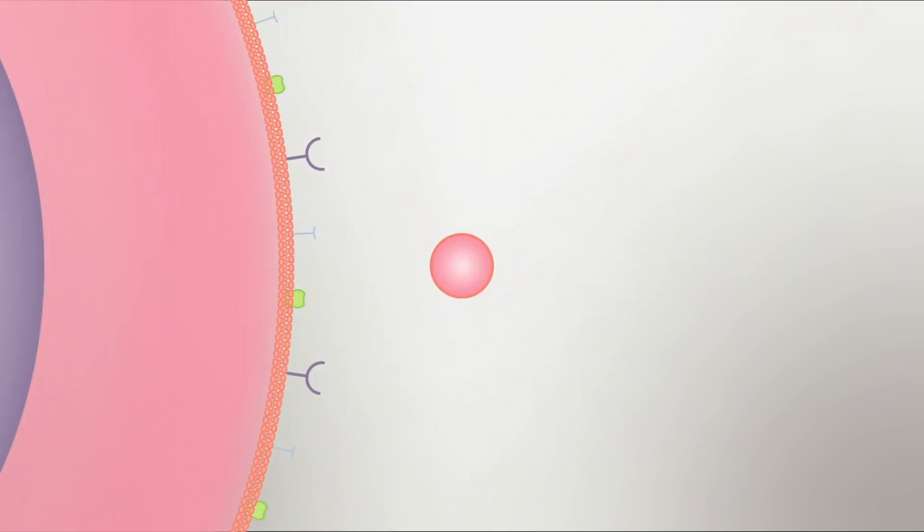The team created nanoparticles coated with fragments of outer membranes from two of the cell types this virus is known to invade in humans. The nanosponges have the same external facing proteins and receptors as the cells they are impersonating.